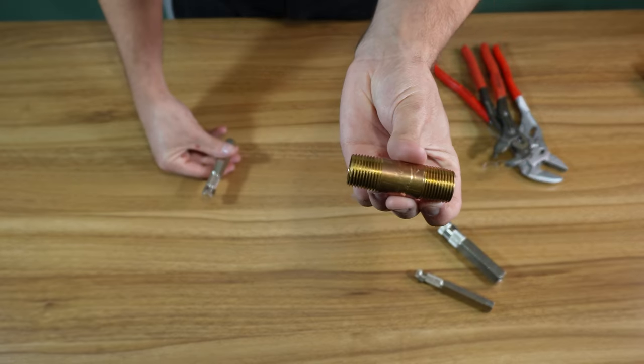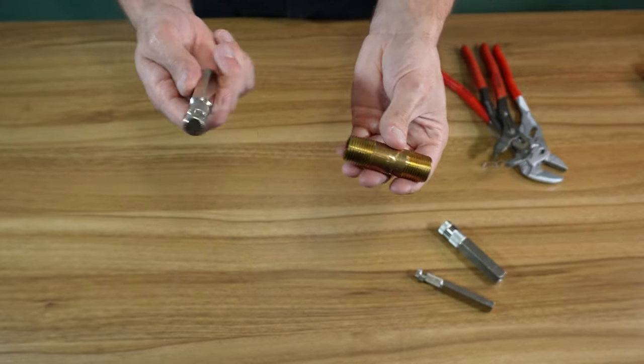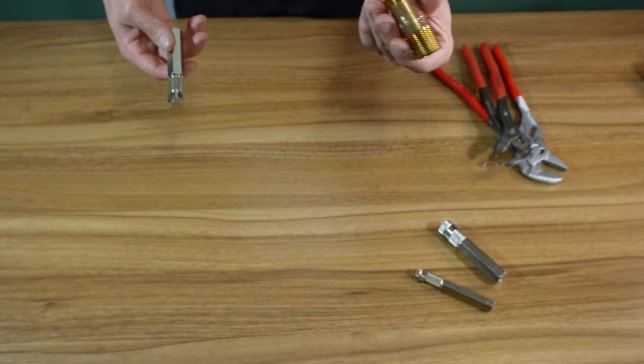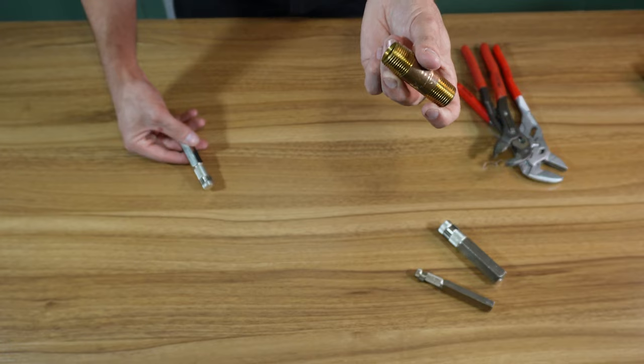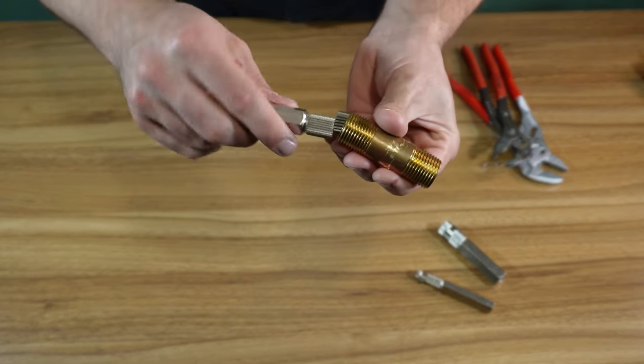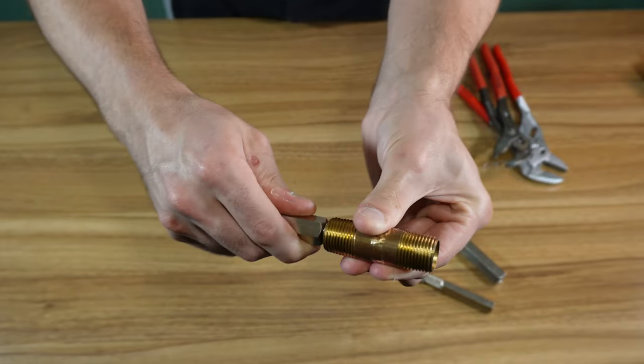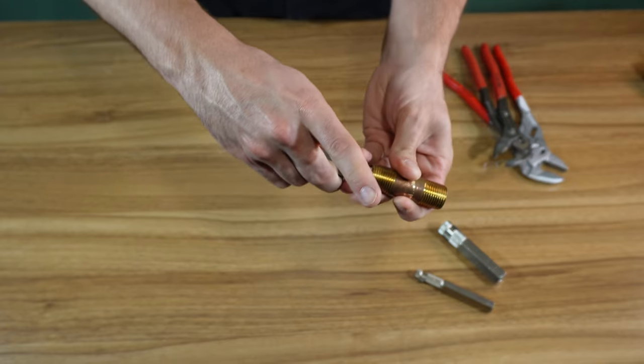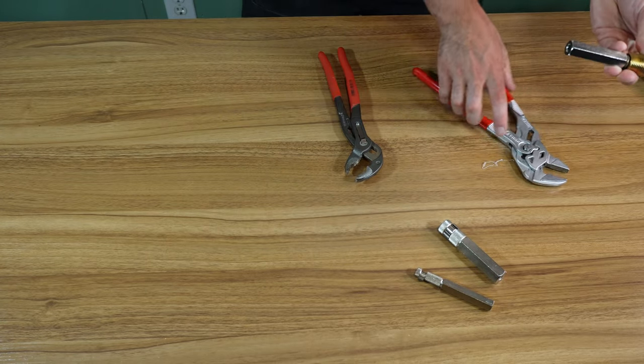So basically what you do is say you have a nipple in the wall behind, like you took your tub spout off or whatever. I replace a lot of galvanized ones. We run into some black iron ones, even brass ones and stuff. Everything will corrode eventually. Basically slide it in, and these can loosen or tighten, so it's just wherever you can get it to catch.